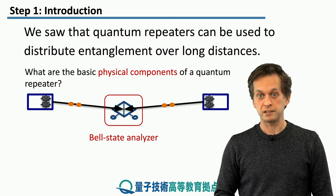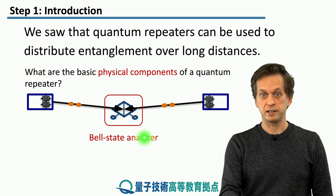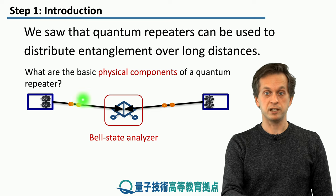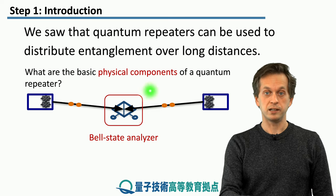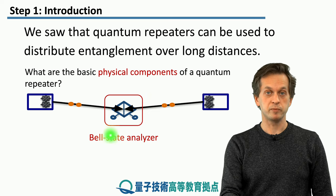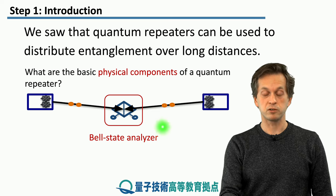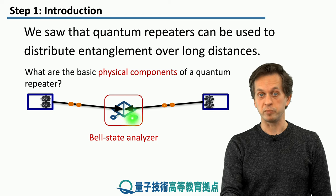The next thing that we need is the bell state analyzer in the middle. The analyzer implements our bell state measurement and it is crucial for implementing entanglement swapping.